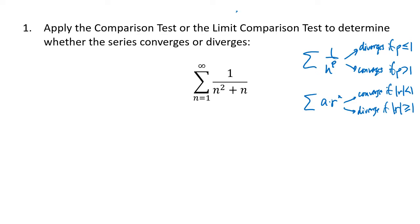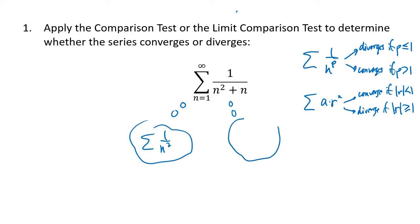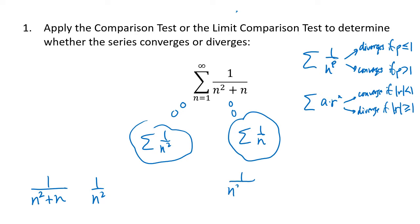For the first example, we don't see anything geometric but we do see some p-series structure. We might think about comparing to the sum of 1/n² or to the sum of 1/n, since we see both of those pieces in the fraction. So let's think about how 1/(n²+n) compares to 1/n² and how it compares to 1/n.